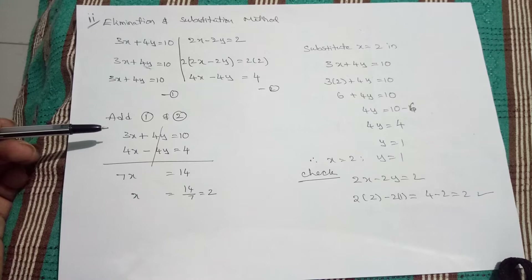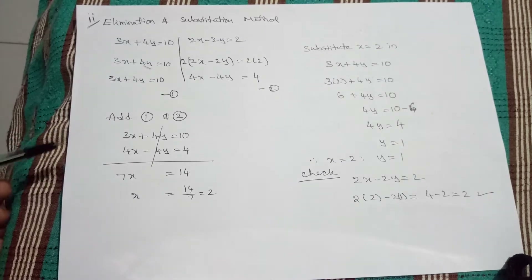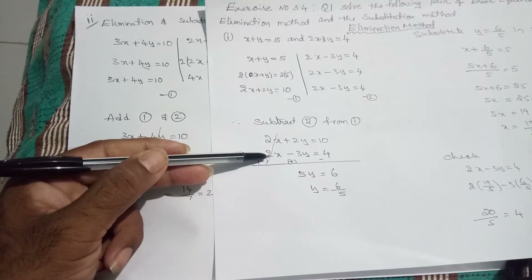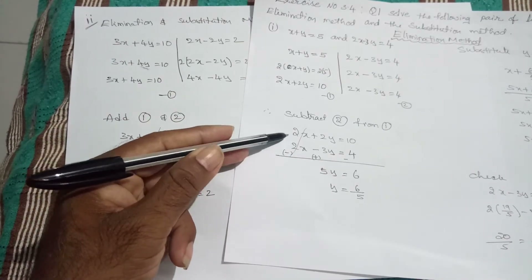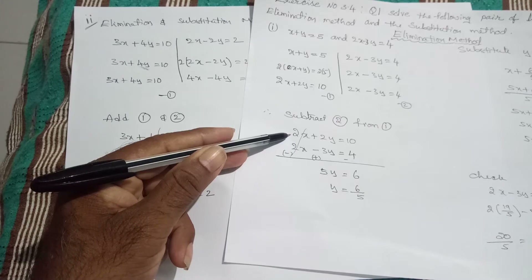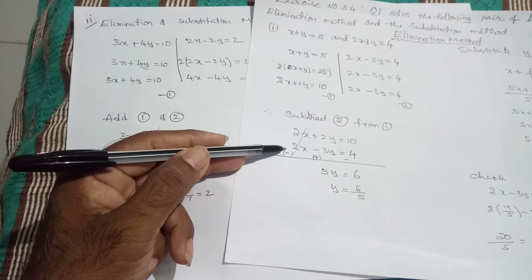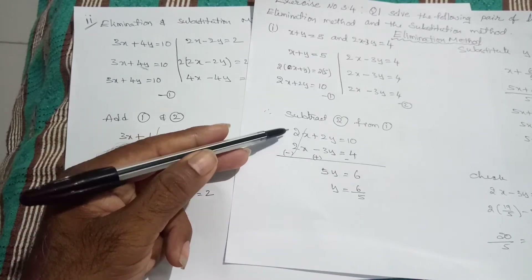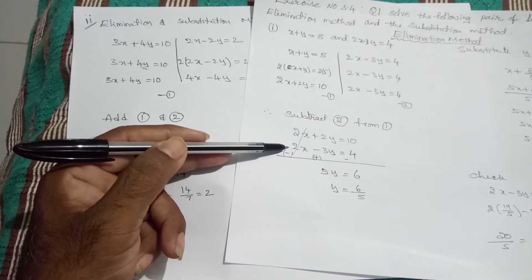In the previous question, I did subtraction and cancelled 2x and 2x, so the x term was cancelled. Now here, if you observe, both 4y terms are positive — they belong to the same sign. Therefore, I subtract. When I subtract, only the second equation's terms get the sign changed, because it is first equation minus the second equation. The minus applies to the second equation only.